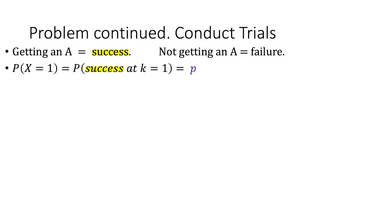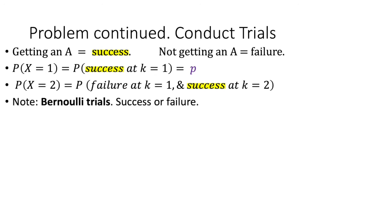Now let's call getting an A a success and not getting an A a failure. Just for this presentation, folks, there's no need to get depressed if you didn't score an A in your last exam. So the probability that first A is graded at trial number one is P. Now what's the probability at trial two? This equals probability that there is no success at trial one, but there is a success at trial two. Note at each trial, we check for a success or a failure. Such a random trial is called a Bernoulli trial.